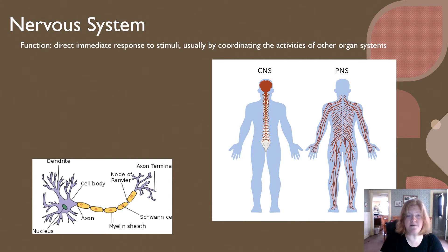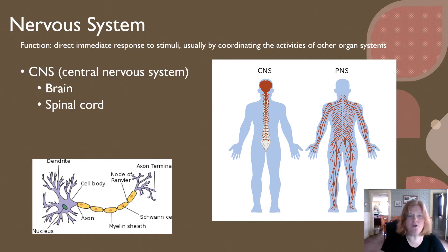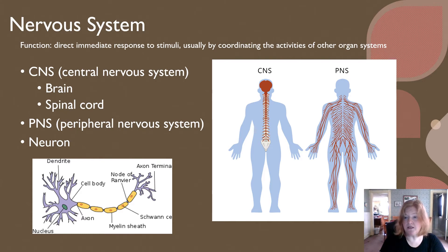Moving on to the nervous system. The nervous system functions to provide direct, immediate response to stimuli — it is the fast response system. It usually coordinates the activities of other organ systems. It's electrical impulses. It includes the central nervous system, the CNS — that's your brain and spinal cord — and the peripheral nervous system, which is the rest of the nerves in your body. The major functional unit of the nervous system is the neuron, an individual nerve cell.